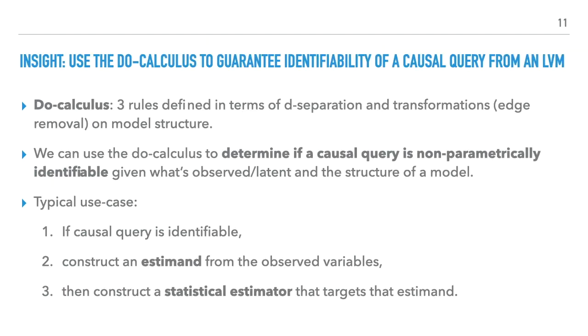We propose using the do-calculus to guarantee identifiability of a causal query in a latent variable model. The do-calculus is three rules defined in terms of d-separation and transformations on the model structure, specifically removal of causal relationships. We can use the do-calculus to determine if a causal query is non-parametrically identifiable given what's observed and what's latent in the data and the structure of a model. The typical use case is as follows. If a causal query is identifiable, construct an estimand from the observed variables, then construct a statistical estimator that targets that estimand.